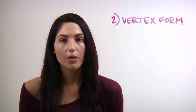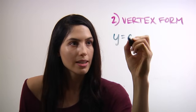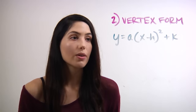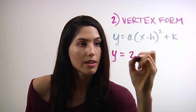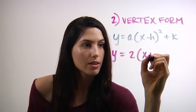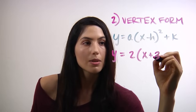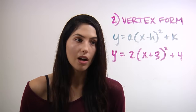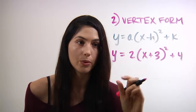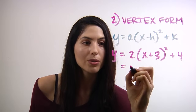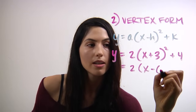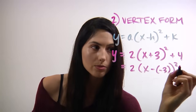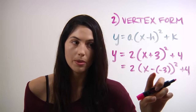Sometimes the signs are a bit more confusing, so I'm going to show you another one. Remember the vertex form looks like this. If you are given an equation that instead has an x plus a number inside the square, all you'll need to do is rewrite it so that it's in the x minus form. So we would have 2 times x minus a negative 3 — since minus a negative is the same as plus, that's plus 3.